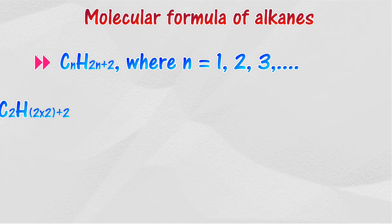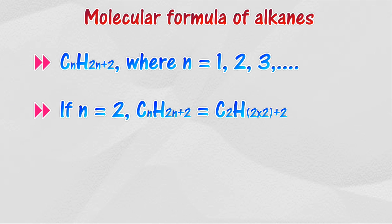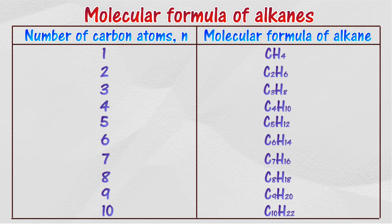For example, given the number of carbon atoms in an alkane molecule is 2, the molecular formula is C₂H₆. The molecular formula for the first 10 alkane members is shown in the table.